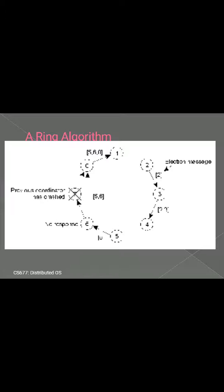In the figure, we see what happens if two processes — 2 and 5 — simultaneously discover that the previous coordinator, process 7, has crashed. Each builds an election message and starts circulating it independently of the other. Eventually, both messages will go all the way around, and both process 2 and 5 will convert them into coordinator messages with exactly the same members in the same order. When both have gone around again, both will be removed. It does not harm to have extra messages circulating — at worst, it consumes a little bandwidth, but this is not considered wasteful.